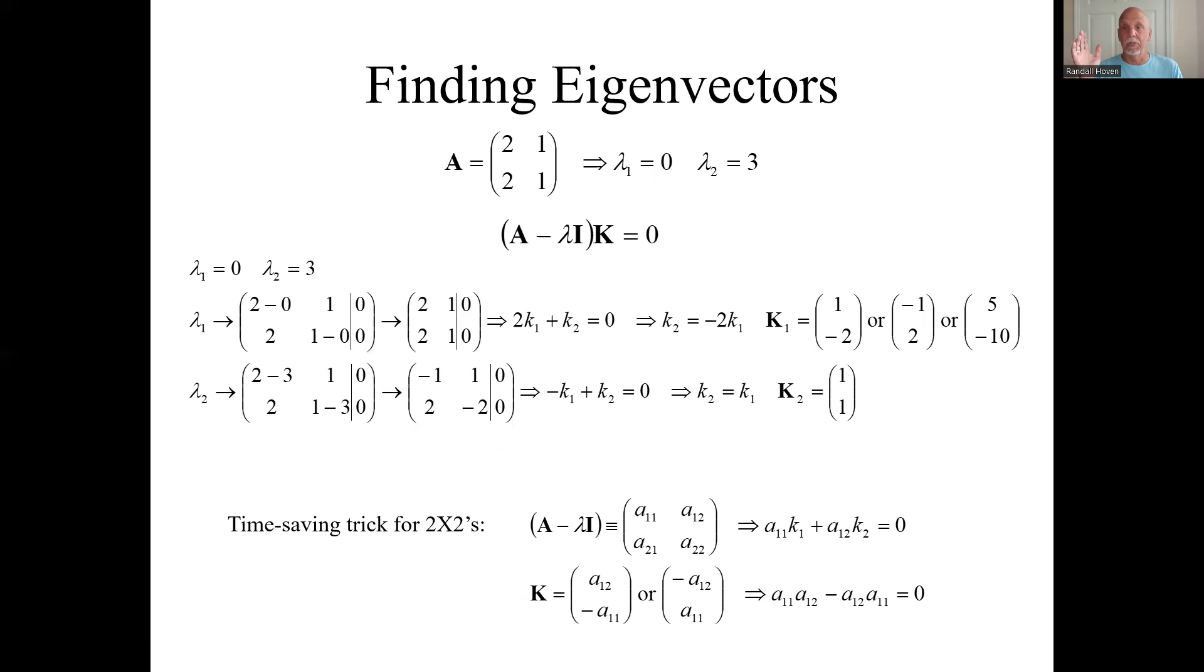Another thing that indicates you screwed up somewhere along the line is if you get an answer of K being all zeros. It can't be all zero. If you get an answer of all zeros, you did something wrong somewhere previous.